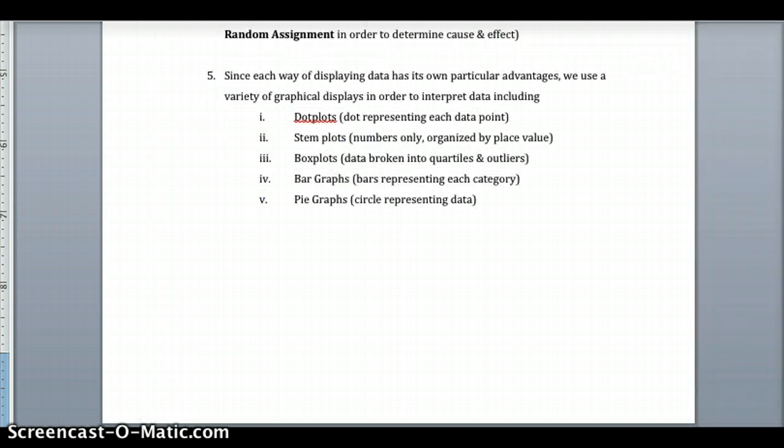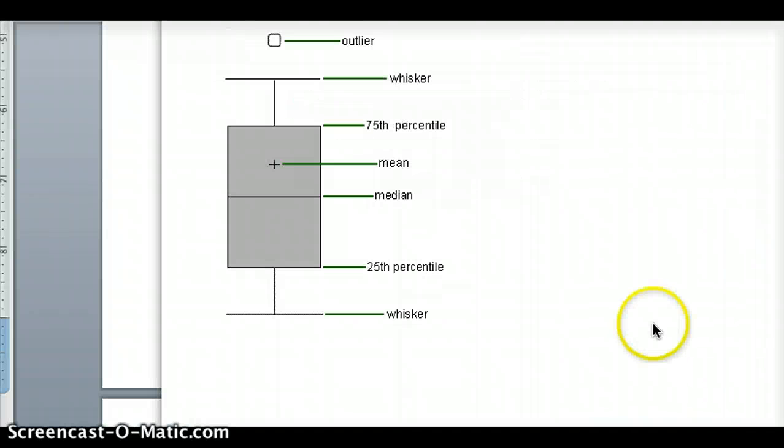We can also use box plots, which break data into quartiles—four sections by numbers. Box plots show the first, second, third, and fourth quarters, plus any outliers. Here we have a box plot plotted vertically. On our calculator, we often see it plotted horizontally from left to right, so you'd turn this 90 degrees on its side.